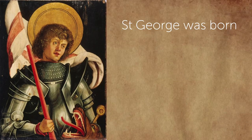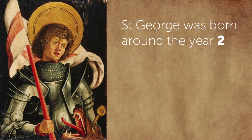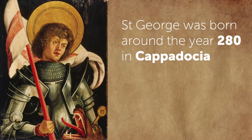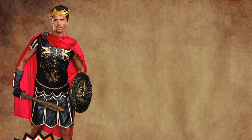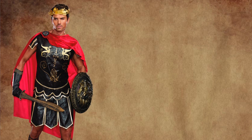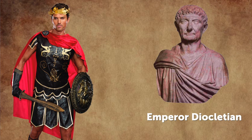St George was born sometime around the year 280 in what is now known as Turkey. He was a soldier and rose up through the ranks of the Roman army, eventually becoming one of the personal guards of the Emperor Diocletian. He was executed for being a Christian on April 23rd and had been buried in the town of Lod in Israel.